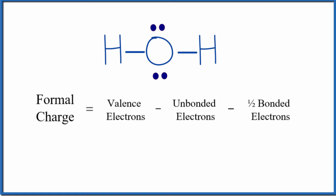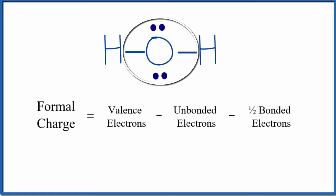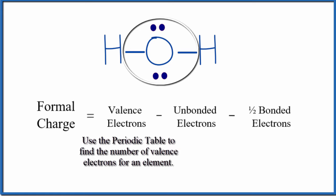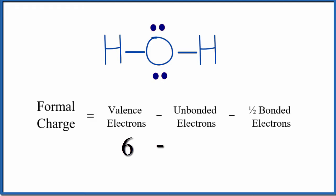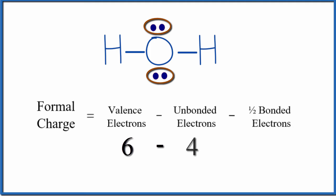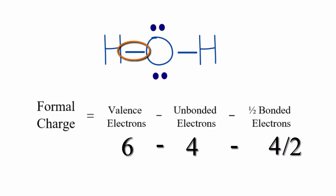This is the equation we're using for formal charges, calculated for individual elements. For oxygen in H₂O: the number of valence electrons for oxygen is six — it's in group 16 or 6A on the periodic table. The unbonded electrons are those not involved in chemical bonds; for H₂O's oxygen, there are four unbonded electrons. Finally, we subtract one half of the bonded electrons — the electrons shared between elements. The two bonds give four bonded electrons, and we take half of that.